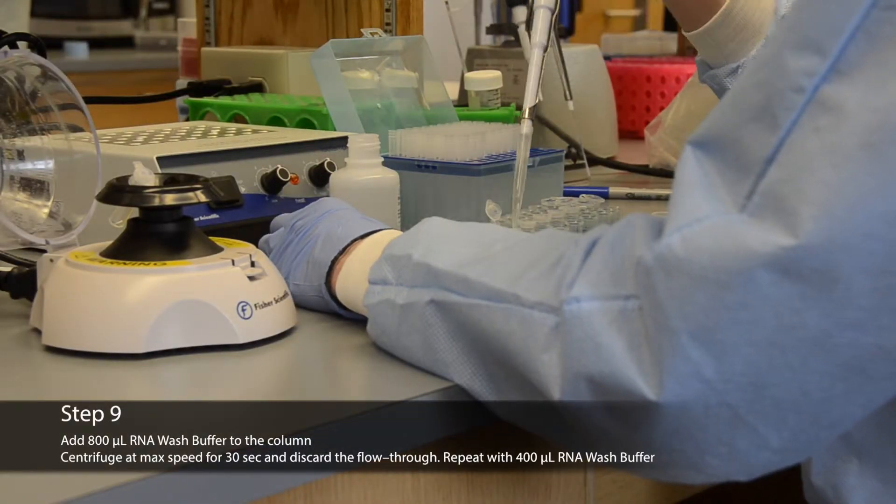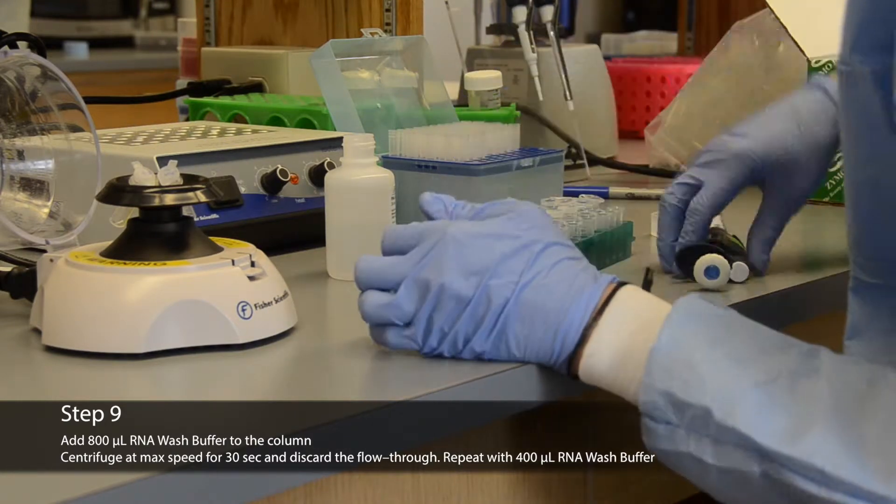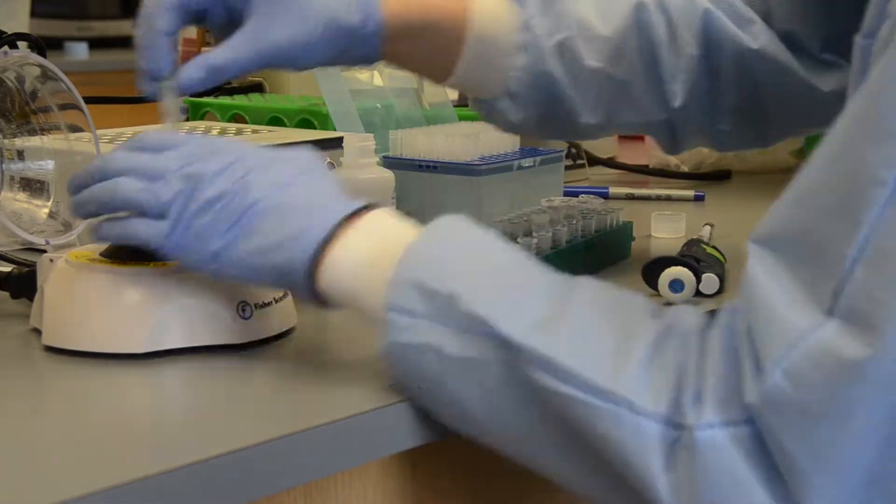Add 800 microliters RNA wash buffer to the column and centrifuge at max speed for 30 seconds. Discard the flow through. Repeat with 400 microliters of the RNA wash buffer.